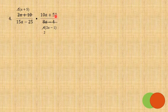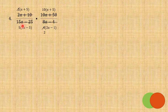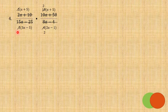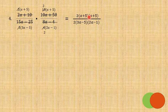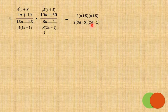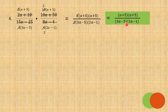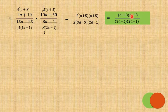Now let's factor 10a+50 using common monomial: 10(a+5). And 15a-25 gives 5(3a-5). So we can factor 10 and 5 — divide both sides by 5 because that is the GCF, so 10 divided by 5 is 2. After that, multiply numerator to numerator and denominator to denominator. We get 2(a+5)(a+5) over (3a-5)(2a-1). The 2 values cancel out, giving the answer (a+5)(a+5) over (3a-5)(2a-1). Note: you can only cancel out between numerator and denominator, not the same position.